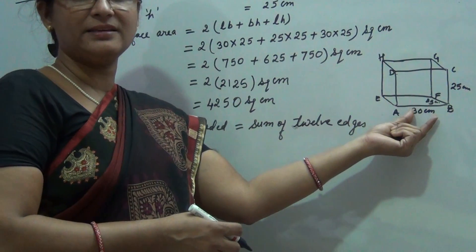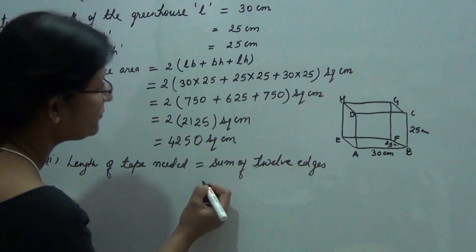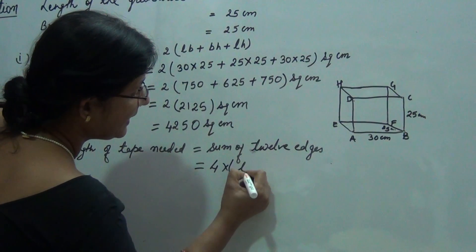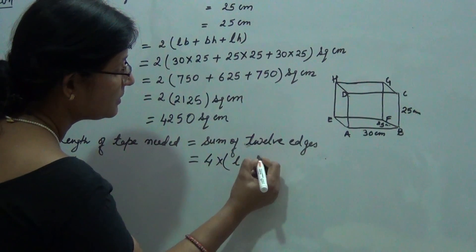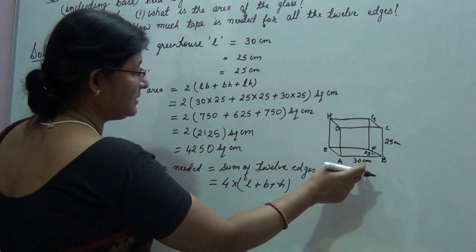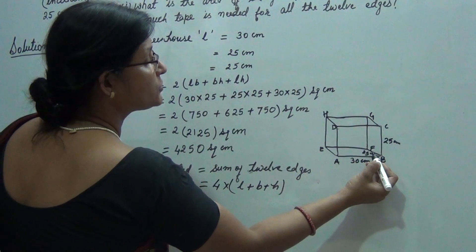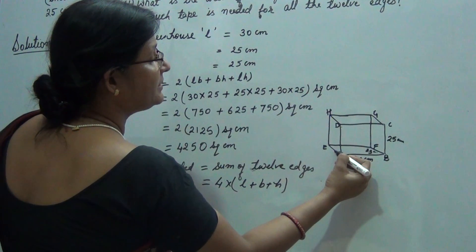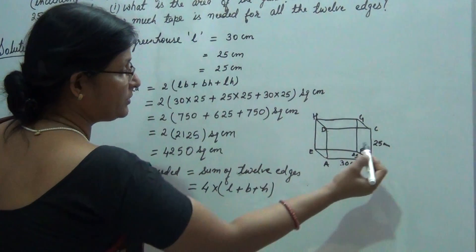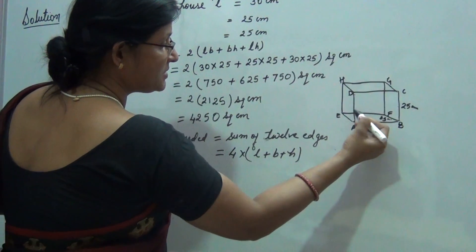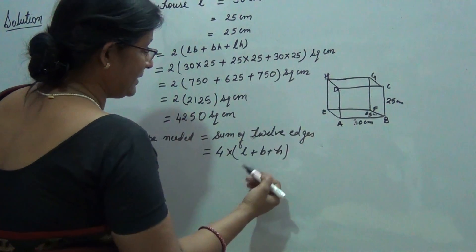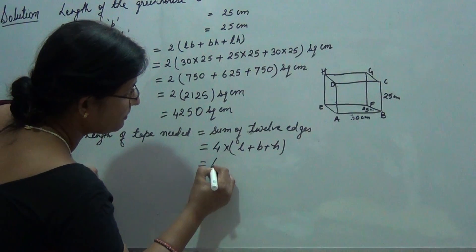So what is the sum of 12 edges? It can be written directly as 4 into (L plus B plus H), because we can see in this figure that L is appearing 4 times, B is also appearing 4 times, and same way 4 times H also. So now again by substituting the values of L, B and H, we can get total length of the tape.